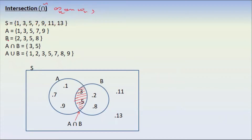Here A, B — so this is A and B. A, A, B, which is 2, three, five. The set of three, five.